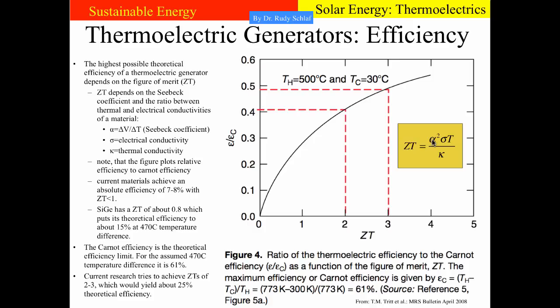When we consider the ZT of silicon germanium — one of the most popular materials for thermoelectric generators — that is 0.8. Looking at 0.8 on the curve, we end up at about 25% of the Carnot efficiency. So 25% of 61% is about 15% at a 470°C temperature differential. What's really being achieved is more of the order of 7% to 8%, as there are losses that are difficult to control. There's a lot of research going on trying to achieve ZTs between 2 and 3. If achieved, devices of about 25% theoretical efficiency might become possible.